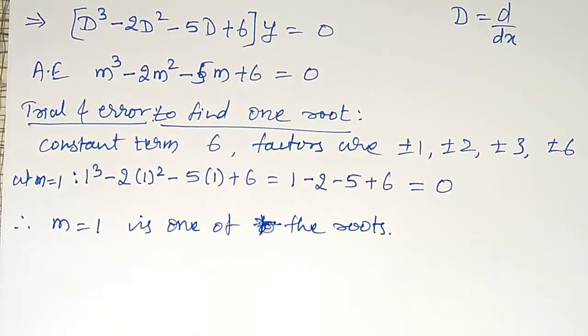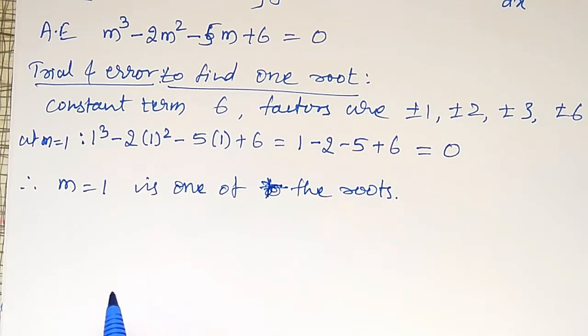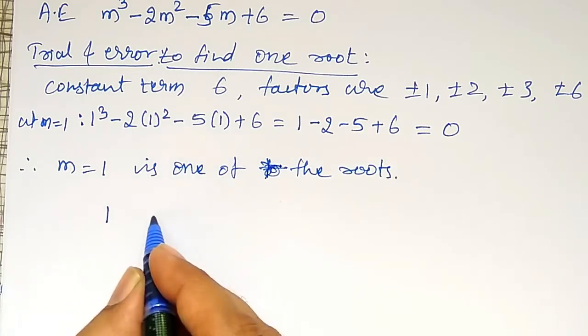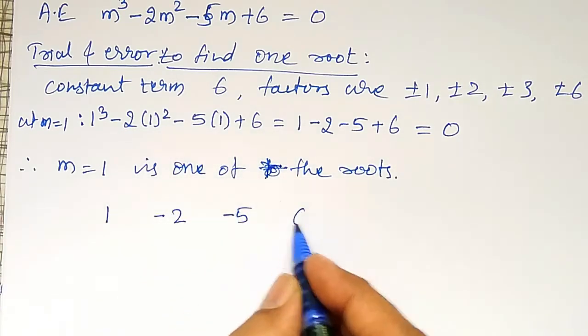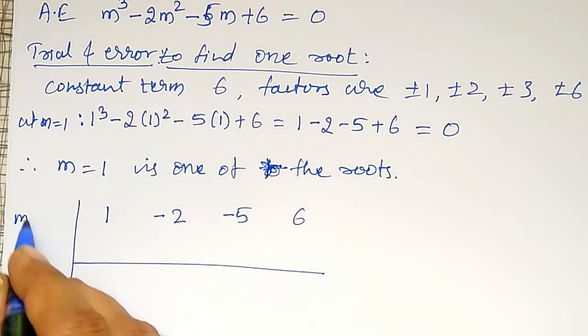Now, using this, m equal to one of the roots, synthetic division have to use. Let me write the coefficients first here. Coefficients of m³ is 1, minus 2, minus 5 and 6. This is divided by m equal to 1.